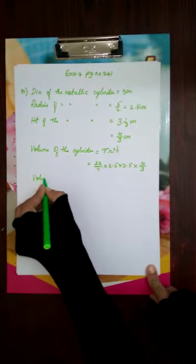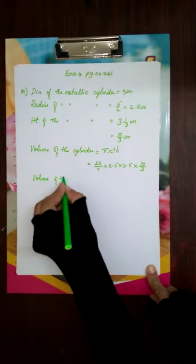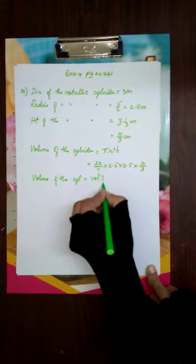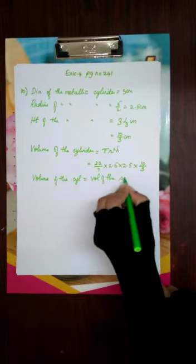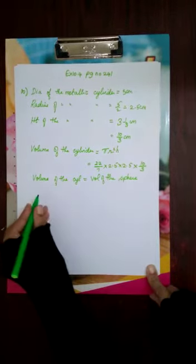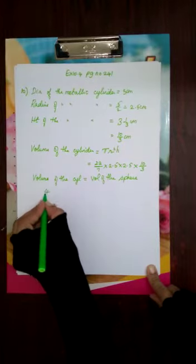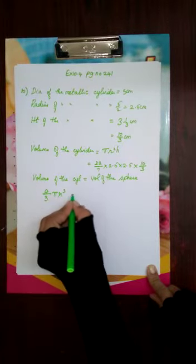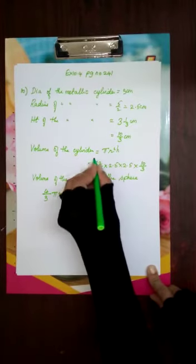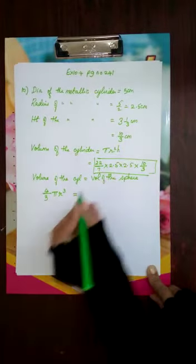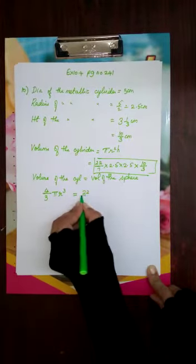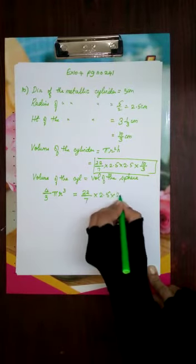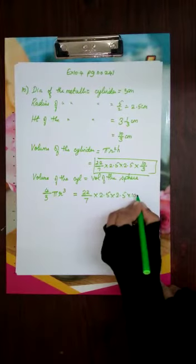Because the same thing is being recast, volume of the cylinder will be equal to volume of the sphere. The formula to find volume of the sphere is 4/3 π r³. So equating: 4/3 π r³ = 22/7 × 2.5 × 2.5 × 10/3.